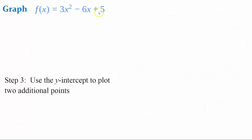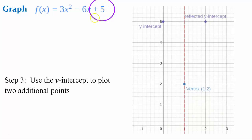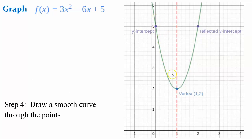For Step 3, we use the y-intercept to plot two additional points. The y-intercept is 5, the value of c, so we plot that point. Because a parabola is symmetrical about the axis of symmetry, the y-intercept is a distance of 1 from the axis of symmetry, so we can reflect this point over the axis of symmetry to get a second point. Step 4: draw a smooth curve through these points to complete the parabola. You could also make a table of values, but that would be less precise.